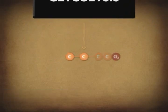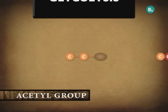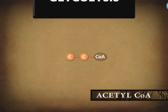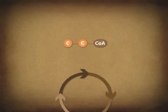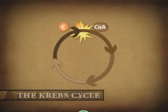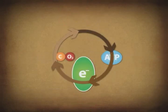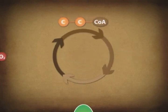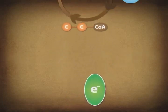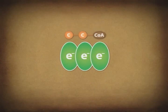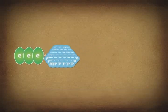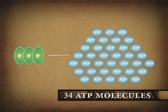Next, pyruvic acid loses a carbon dioxide and forms an acetyl group. The acetyl group combines with a form of vitamin B6, resulting in a compound called acetyl coenzyme A, or acetyl-CoA. Acetyl-CoA then delivers the acetyl group to the Krebs cycle. The Krebs cycle removes electrons from hydrogen and sends them on to the third phase, the electron transport chain. Each time the Krebs cycle turns, it produces a molecule of ATP. The waste product is carbon dioxide. Finally, the electrons from the acetyl group enter the electron transport chain where electrons are passed between chemicals. The result is 34 molecules of ATP, which can be used as energy.